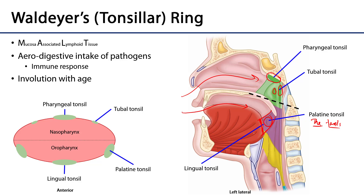Notice that these tonsils comprise a ring, with the nasopharynx being the superior portion of the ring and the oropharynx being the inferior portion. The ring is bisected by the soft palate. Altogether, this is what is known as Waldeyer's tonsillar ring.